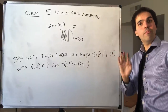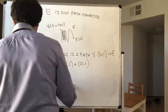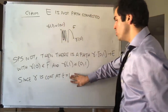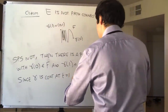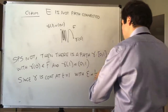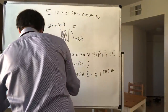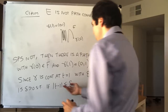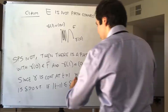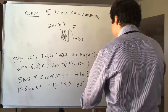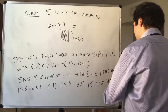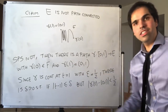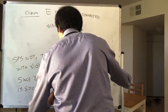Let's use continuity. Since γ is continuous at t = 1, applying the definition of continuity with ε = 1/2, there exists some δ such that if |t − 1| ≤ δ, then |γ(t) − (0, 1)| < 1/2. Since t ∈ [0, 1], this is equivalent to saying t ∈ [1 − δ, 1].